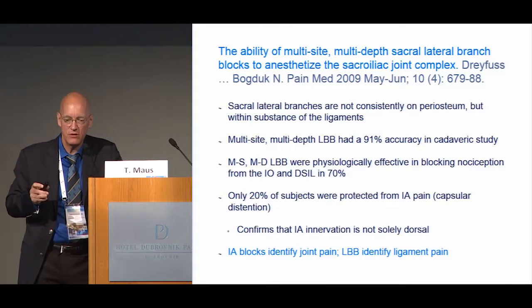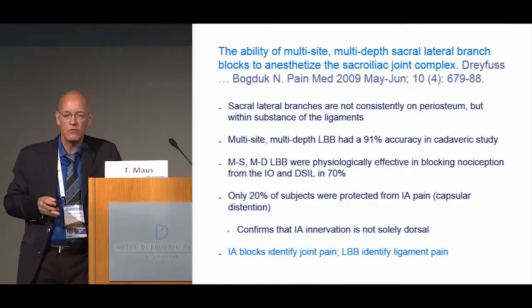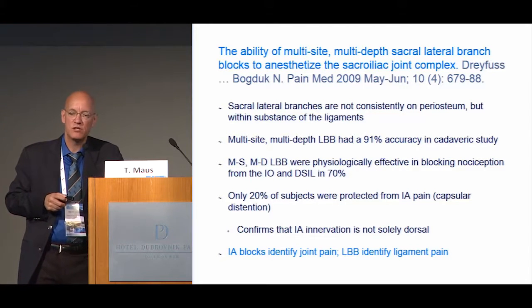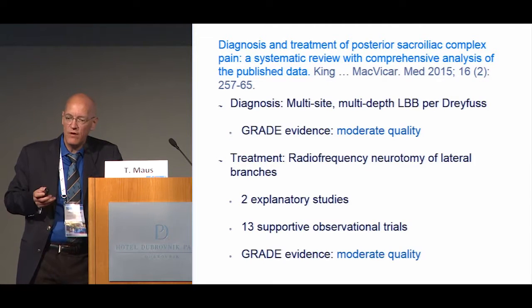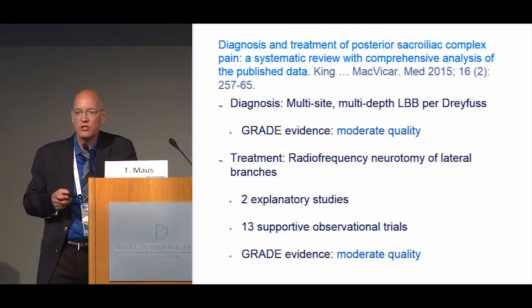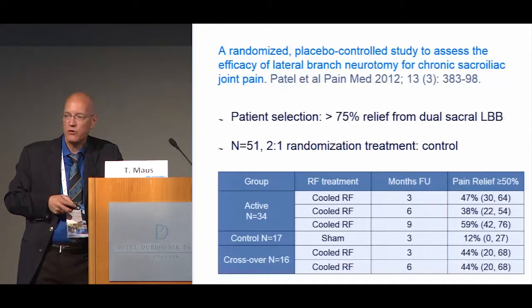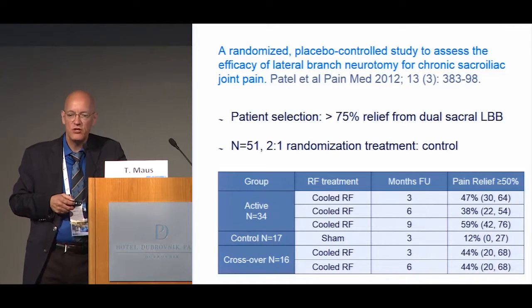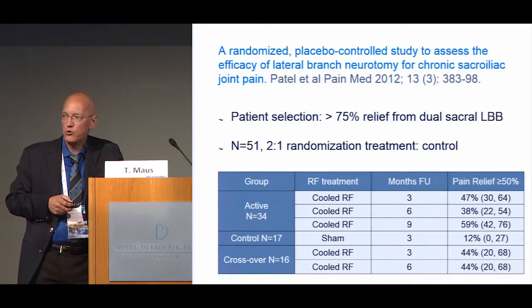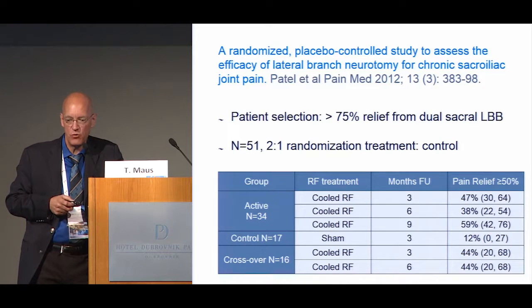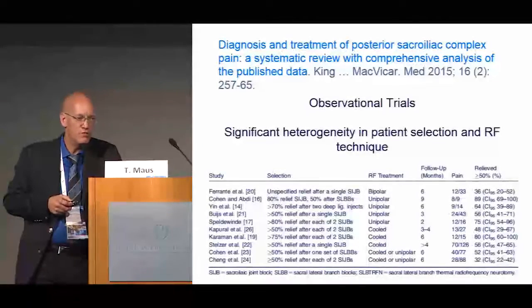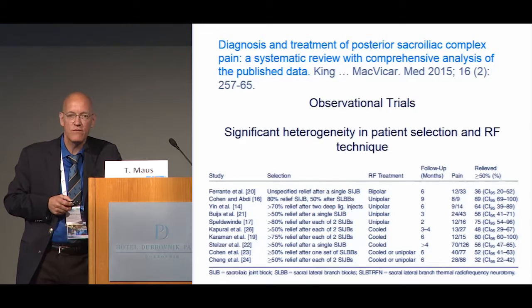The way to conceptualize this: intra-articular blocks identify joint pain; lateral multi-site, multi-depth branch blocks identify ligamentous pain. The systematic review of posterior sacroiliac joint complex pain showed moderate quality evidence for diagnosis and for radiofrequency neurotomy of lateral branches — two explanatory trials and 13 supportive observational trials. The most recent explanatory trial by Nilesh Patel in 2012 selected patients with greater than 75% relief from dual sacral lateral branch blocks, randomized two-to-one to treatment versus control, and showed significant pain relief out to nine months. The sham group had only 12% pain relief reaching a threshold of 50% improvement.